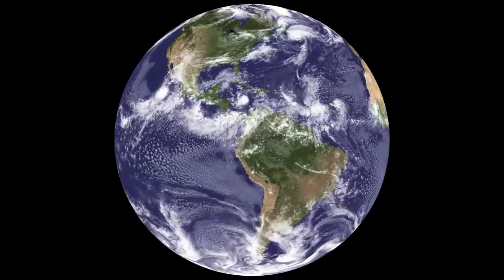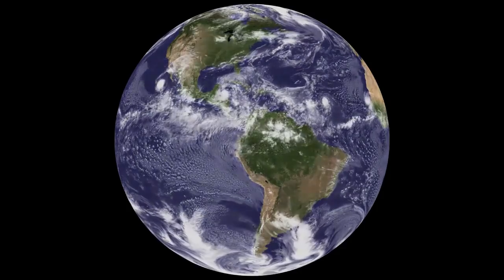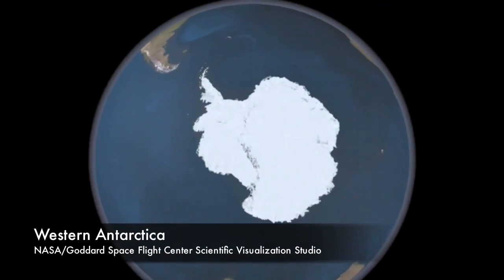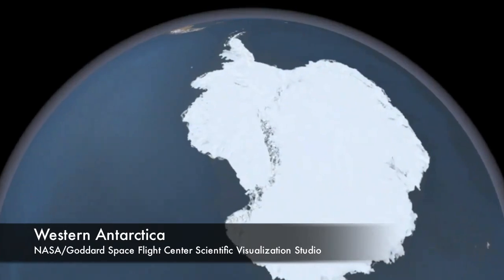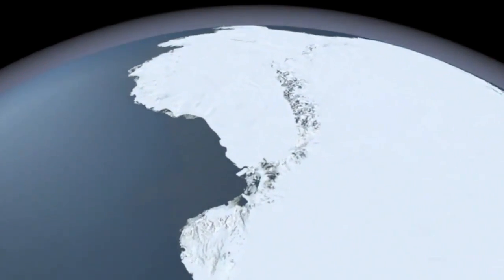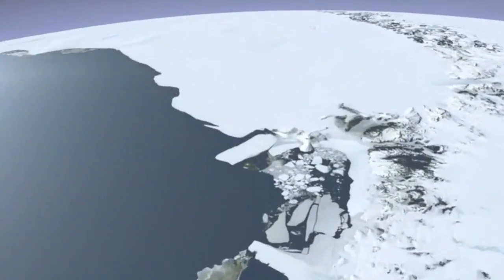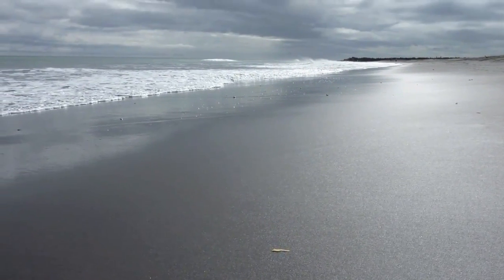The earth has undergone dramatic change over its geologic history. As the earth has cooled and warmed, ice fields have advanced and receded. During warming periods, ice melts and water expands, causing sea level rise.